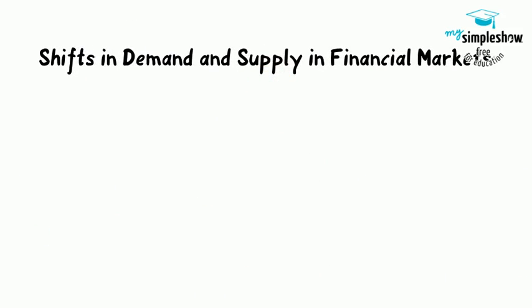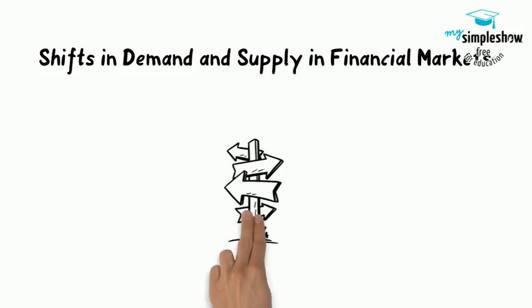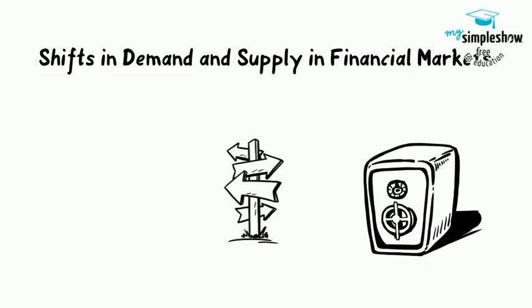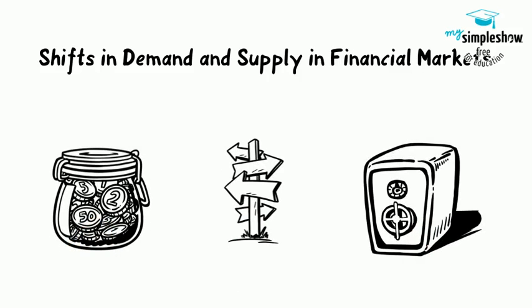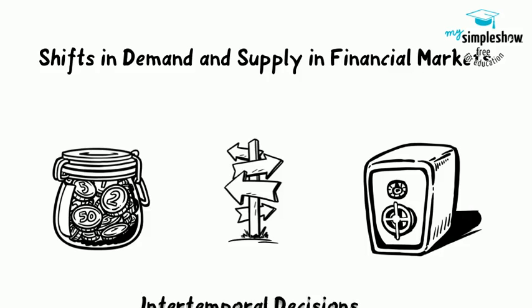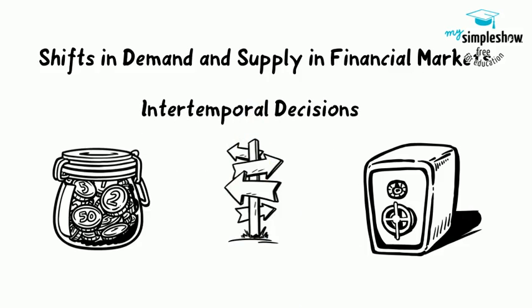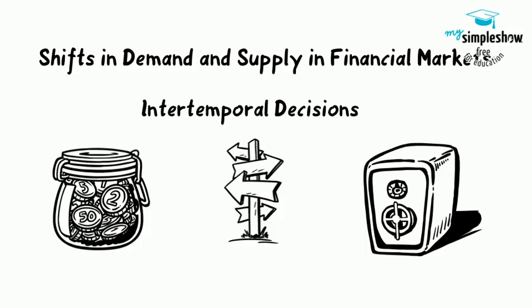Those who supply financial capital face two broad decisions: how much to save, and how to divide up their savings among different forms of financial investments. Participants in financial markets must decide when they prefer to consume goods — now or in the future. Economists call this inter-temporal decision making because it involves decisions across time. Unlike a decision about what to buy from the grocery store, people make investment or savings decisions across a period of time, sometimes a long period.